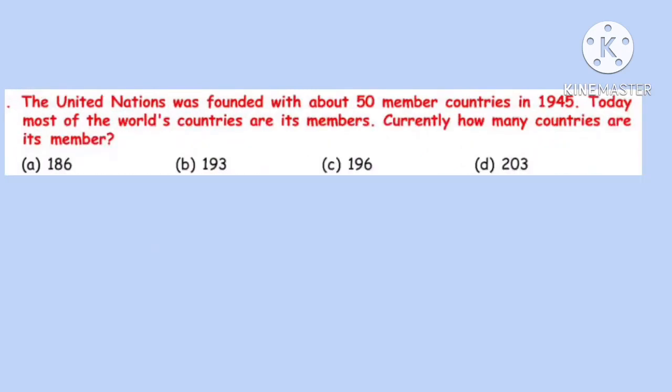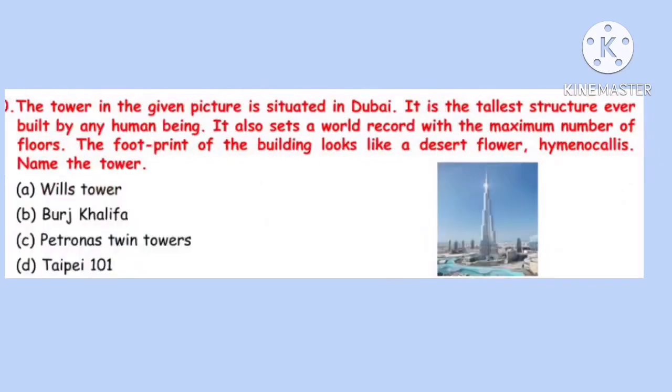Question 19. The United Nations was founded with about 50 member countries in 1945. Today, most of the world's countries are its members. Currently, how many countries are its members? Correct option is B: 193.